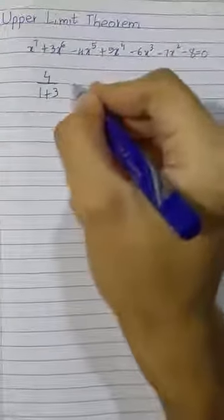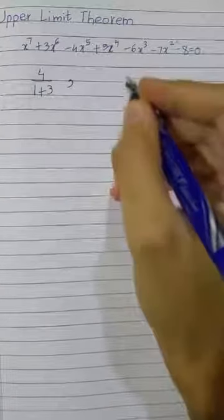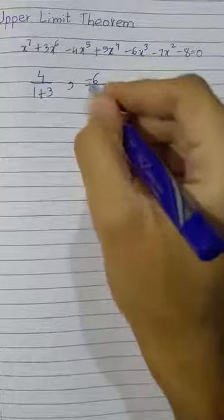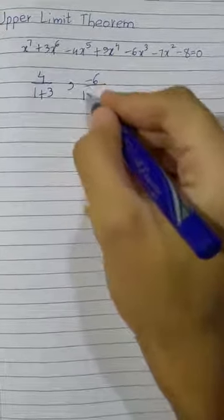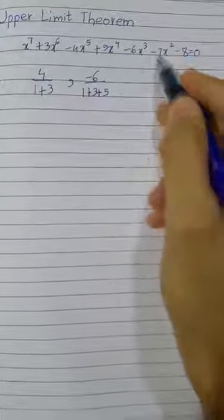Again, positive coefficient, negative coefficient. So divide minus 6 by preceding positive coefficients. That is 1 plus 3 plus 5.